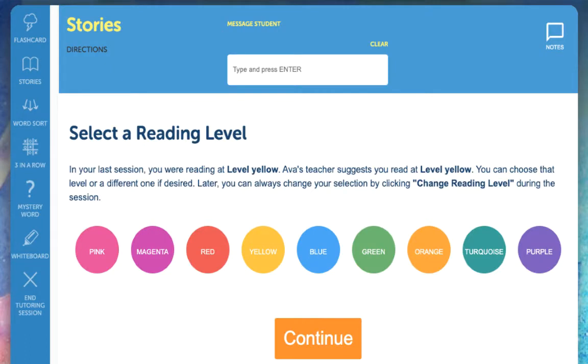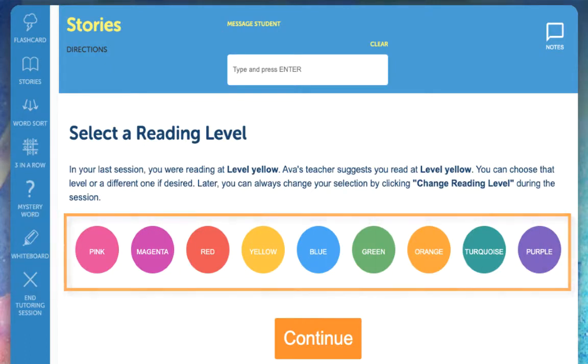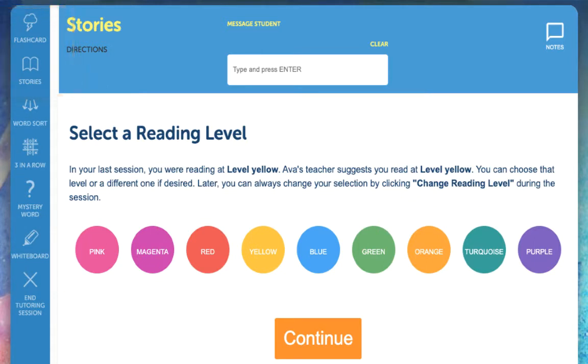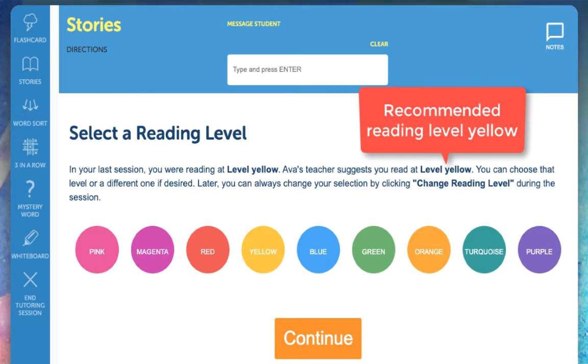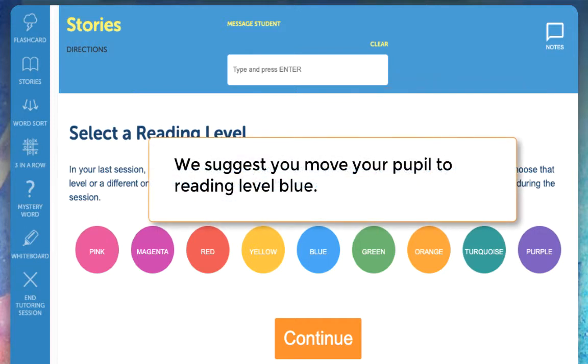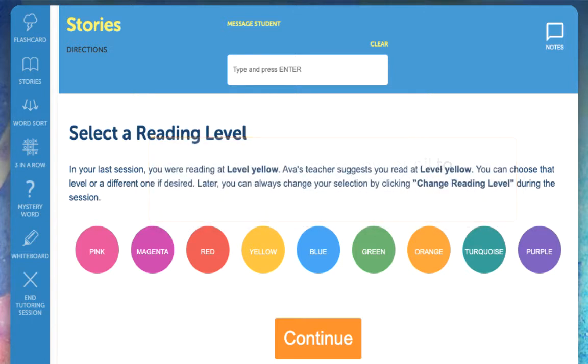The first step to getting started with the activities will be to select your student's reading level. This is done for both flashcards and stories. Reading levels are set by the teacher and will be listed above the reading level buttons. If the teacher doesn't move the pupil's reading level after a 30 day period, the system will prompt you to move the student to the next reading level. If you find the material is too difficult for your student, you can always move them back to the previous reading level and then try advancing them again the following week.